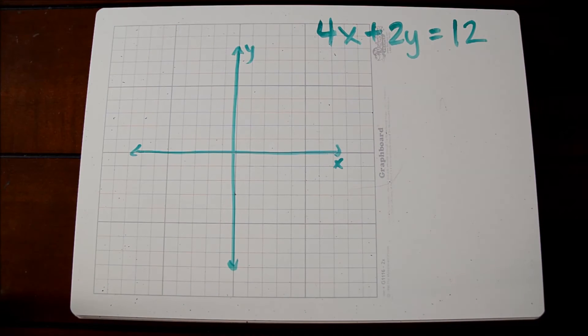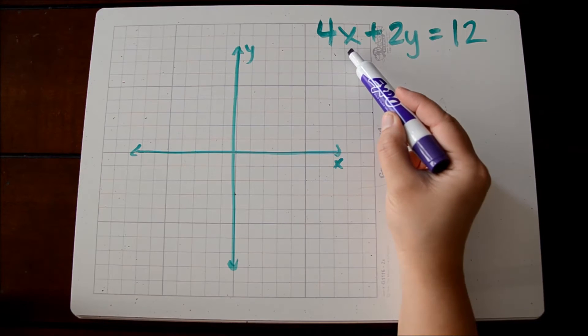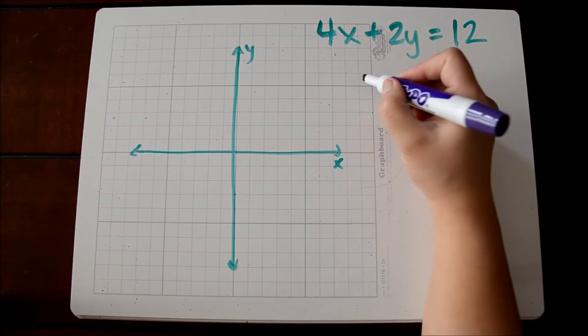Let's take a look at our first example. Here we have an equation written in standard form. What we could do is find the intercepts and graph them.